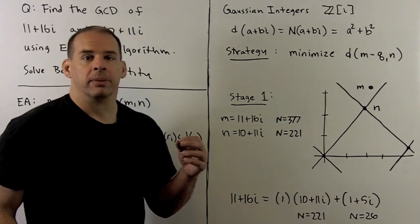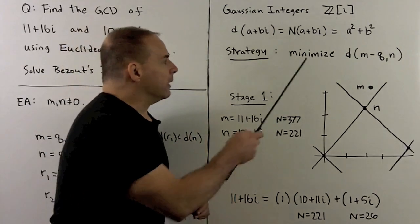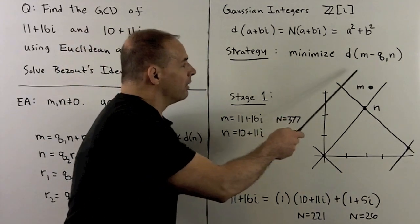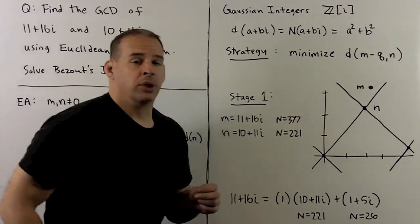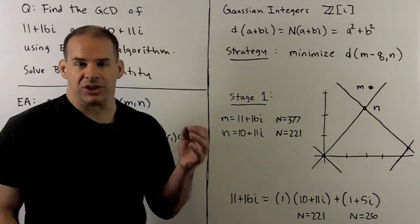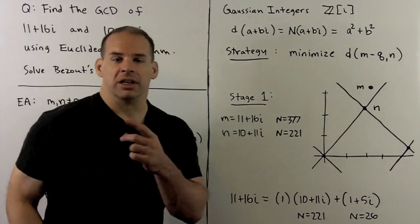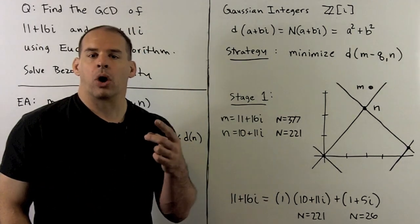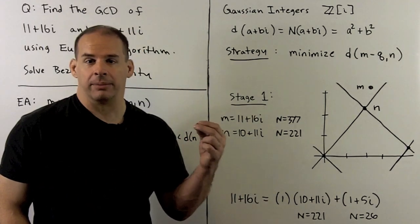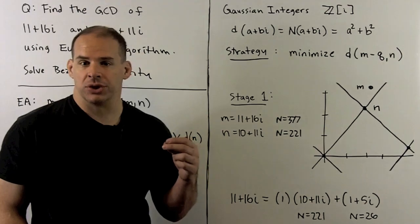How do I find q and r? The strategy is, I want to minimize the function d of m minus qn, where q ranges over all Gaussian integers. This is going to guarantee our condition that r is zero or d of r is strictly less than d of n.